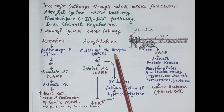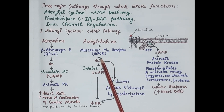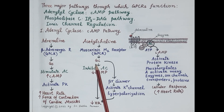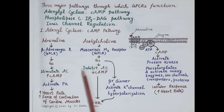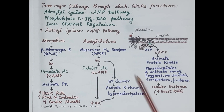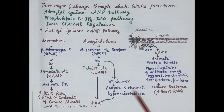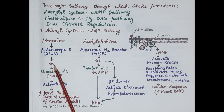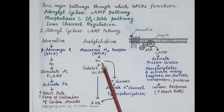Acetylcholine is a ligand for muscarinic M2 receptors located on the myocardium. M2 receptors are also G protein coupled receptors, but here acetylcholine activates G inhibitory proteins. The alpha subunit of the G inhibitory protein inhibits adenyl cyclase, reducing cyclic AMP. On the other hand, the beta-gamma dimer activates potassium channels, producing hyperpolarization, and this results in a fall in heart rate.